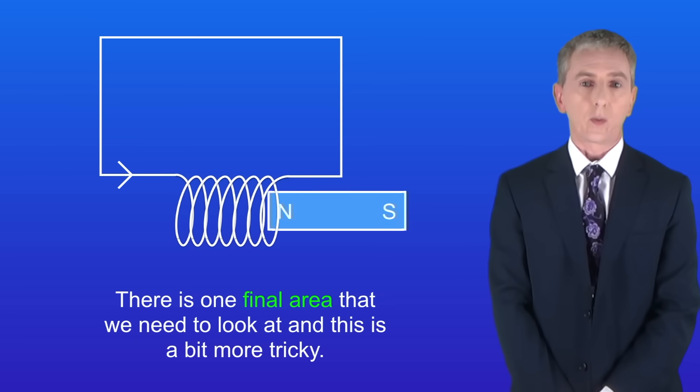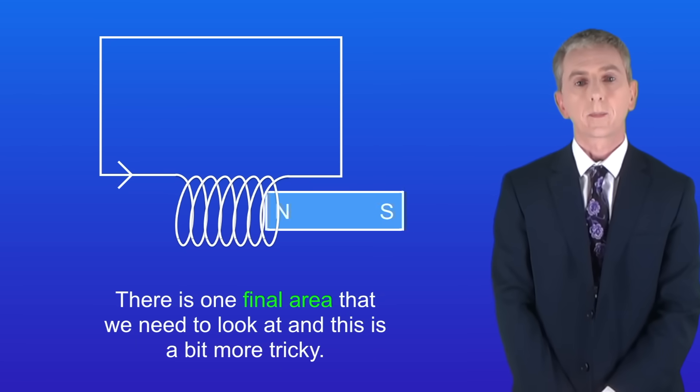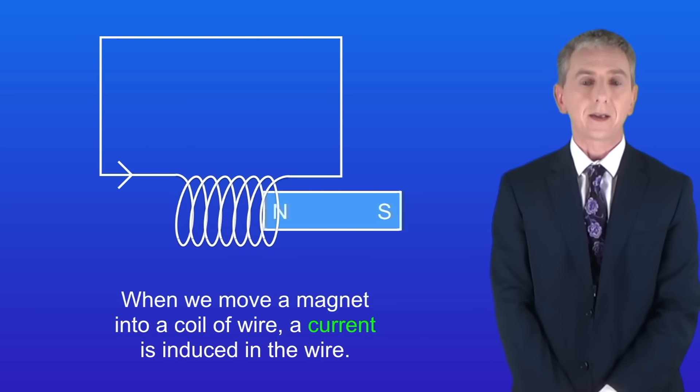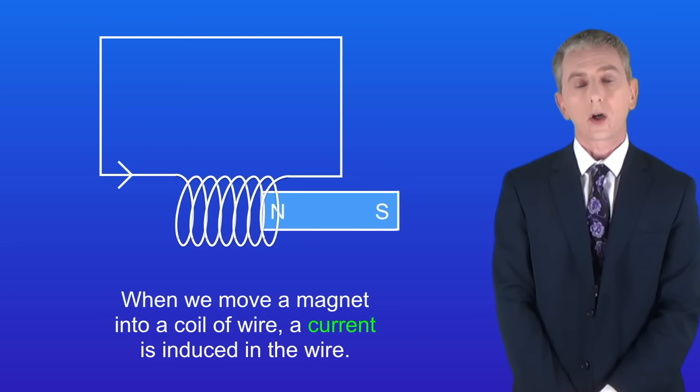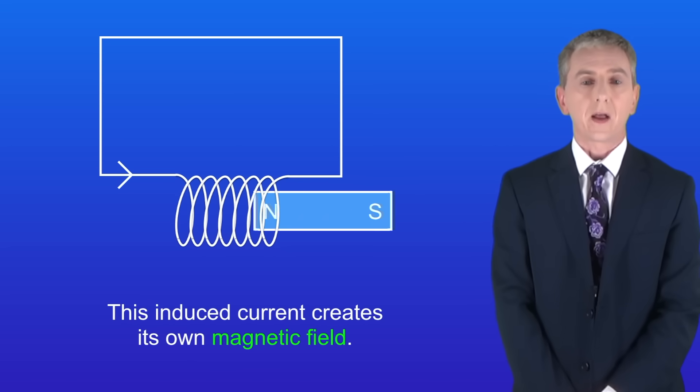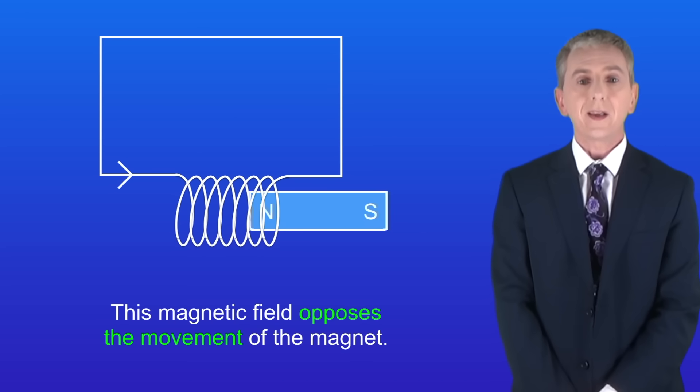There's one final area that we need to look at and this is a bit more tricky. As we've seen, when we move a magnet into a coil of wire a current is induced in the wire. Now the key fact is that this induced current creates its own magnetic field, and this magnetic field opposes the movement of the magnet.